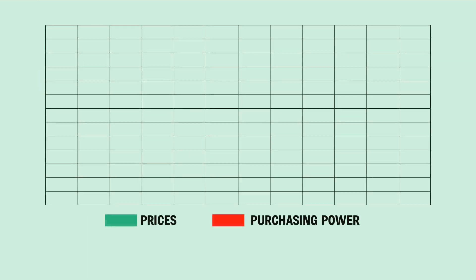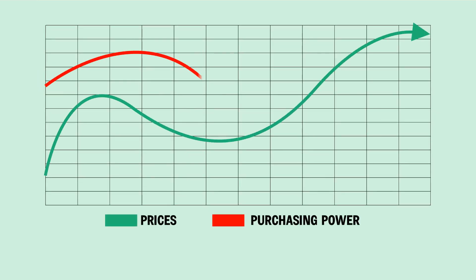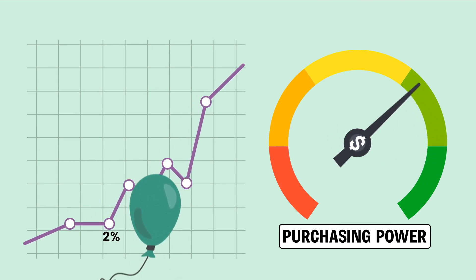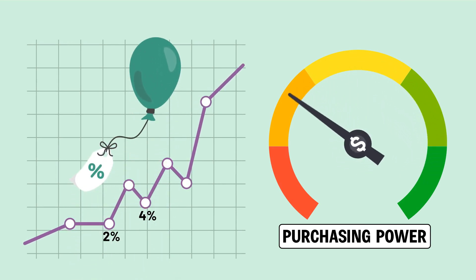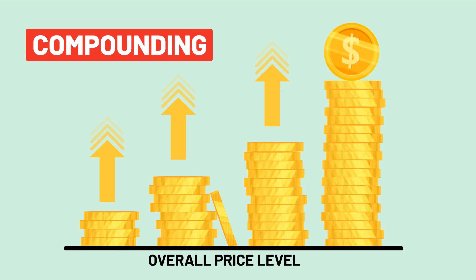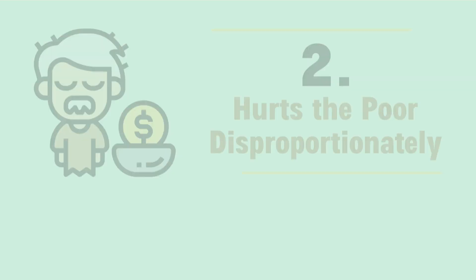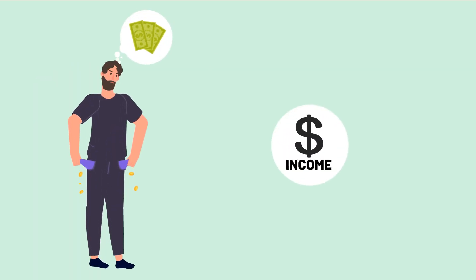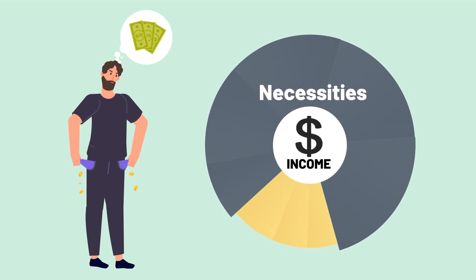Inflation changes the economy in various ways. First, it erodes purchasing power — inflation's primary and most pervasive effect. An overall rise in prices reduces the purchasing power of consumers, since a fixed amount of money will afford progressively less consumption. Consumers lose purchasing power whether inflation runs at two percent or four percent — they just lose it twice as fast at the higher rate.